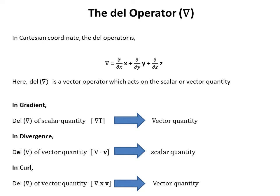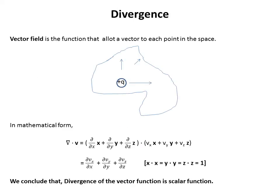In gradient, the DEL operator acting on a scalar quantity gives a vector quantity. In divergence, the DEL operator acting on a vector quantity gives a scalar quantity. In the case of curl, the DEL operator acting on a vector quantity gives a vector field.